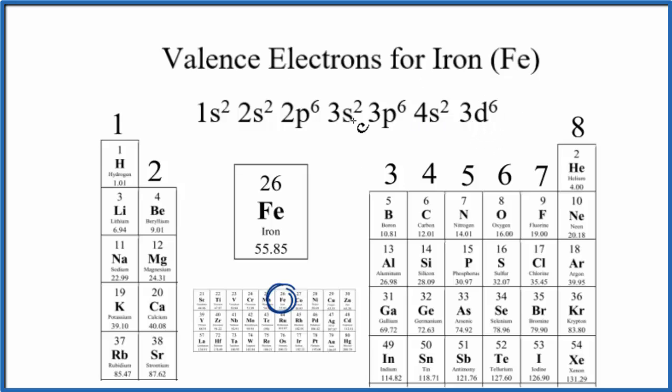So we have our electron configuration, and we want to figure out how many valence electrons we have for iron. The way we do that is we look at the condensed notation for iron, the condensed electron notation.